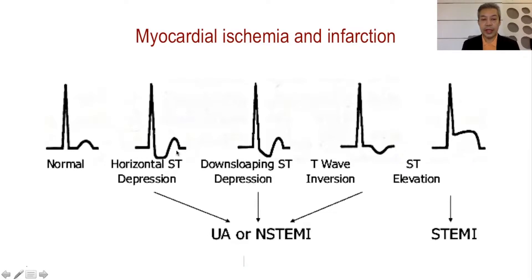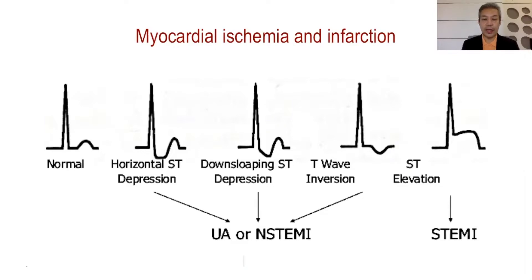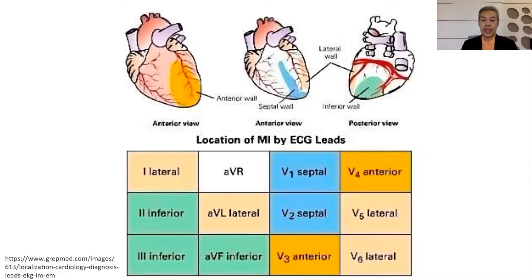As opposed to ST segment depression, only ST segment elevation is localizing — meaning if we localize it to a specific myocardial segment, that segment is truly affected and the coronary artery supplying it is blocked. That is not true for ST segment depression. For ST elevation myocardial infarction, if we see ST segment elevation in lead 1, AVL, V5, and V6, we call that a lateral wall infarction.